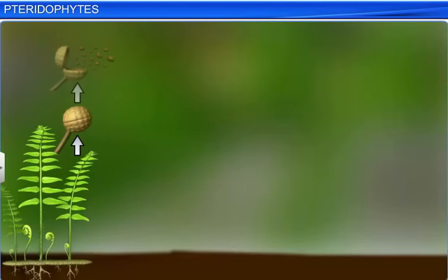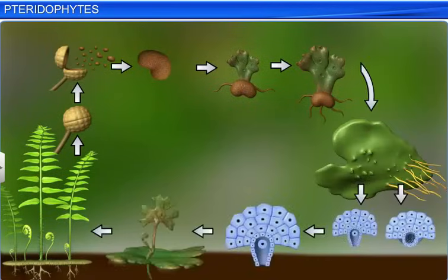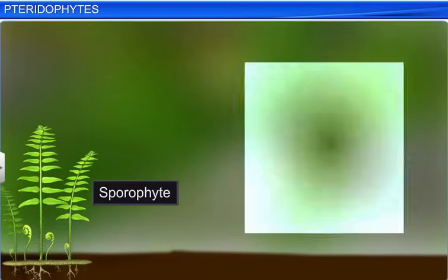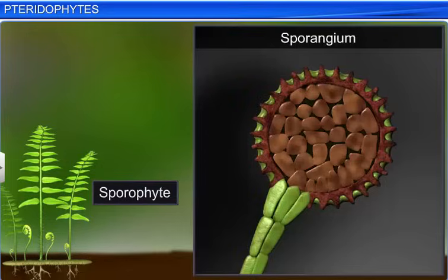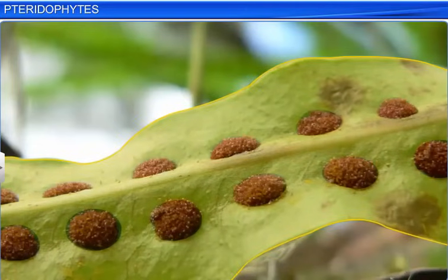The life cycle of a pteridophyte begins when the plant body, a sporophyte, bears sporangia, which are subtended by leaf-like appendages called sporophylls.